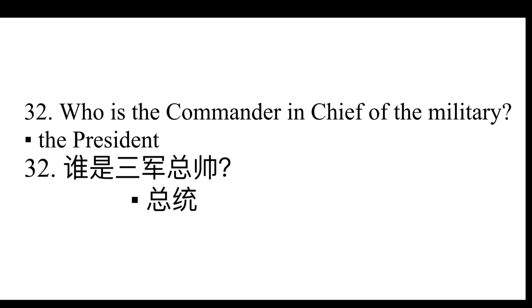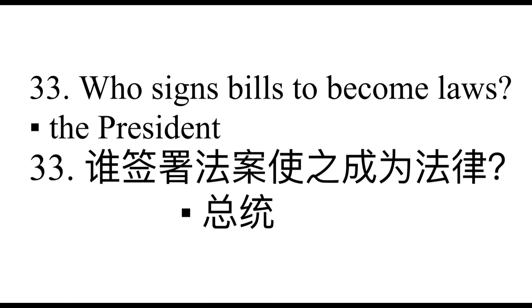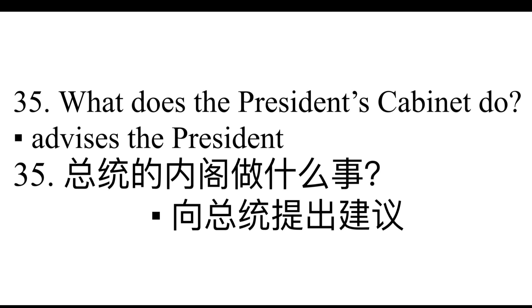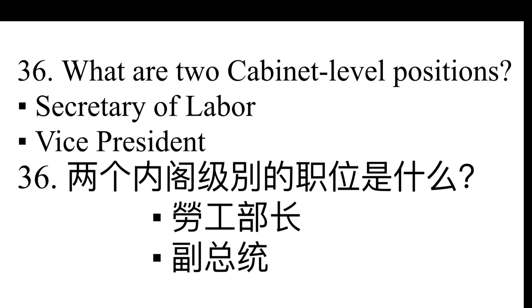Who is the commander-in-chief of the military? The President. Who signs bills to become laws? The President. Who vetoes bills? The President. What does the President's Cabinet do? Advises the President. What are two Cabinet-level positions? Secretary of Labor. Vice President.